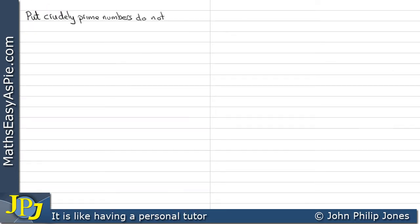Put crudely, prime numbers do not divide by anything except by one and itself. 7 is an example of a prime number.